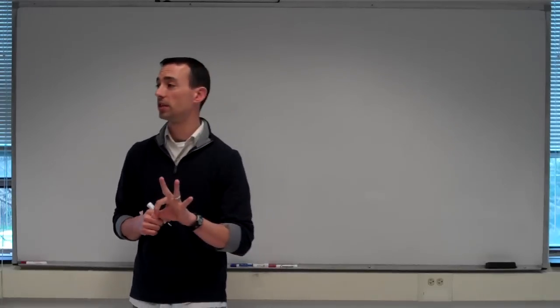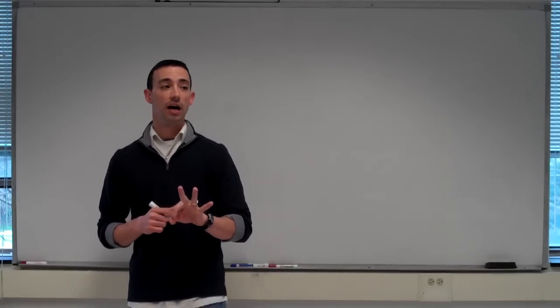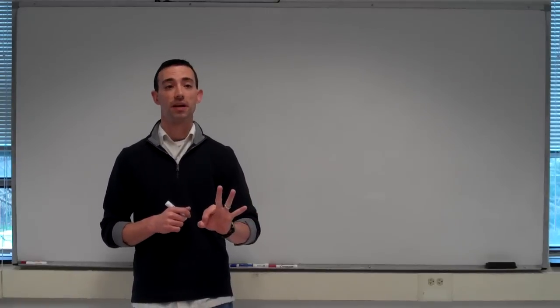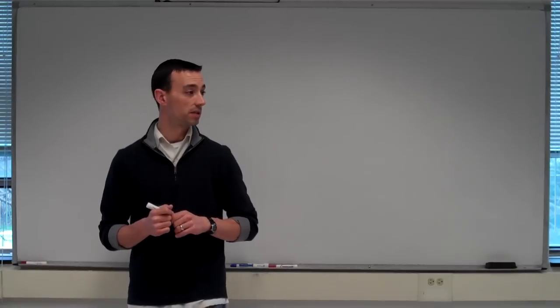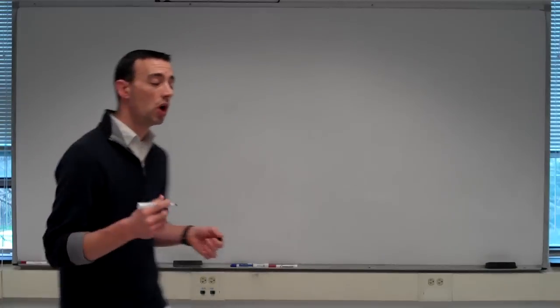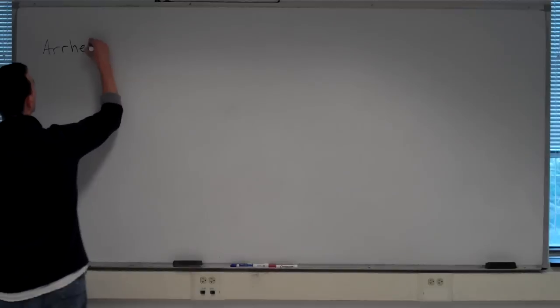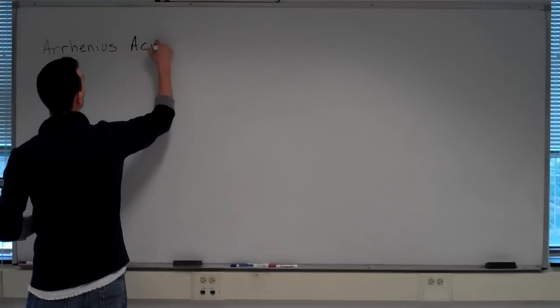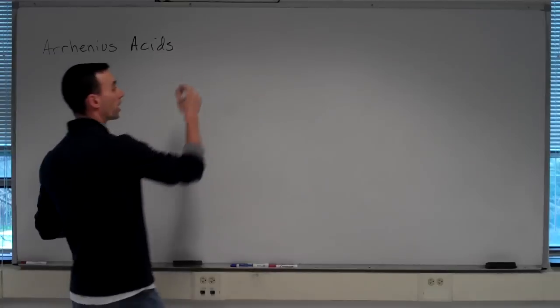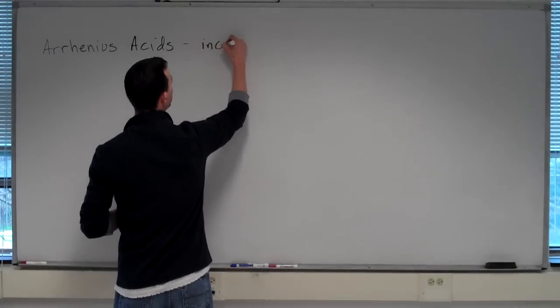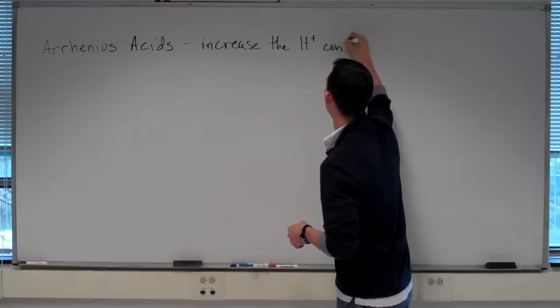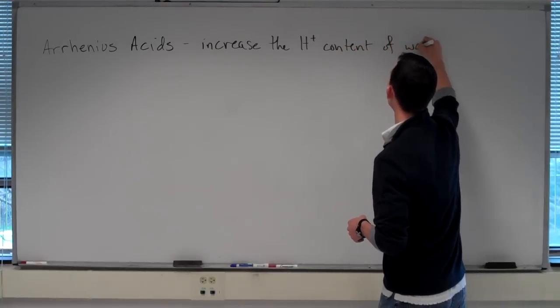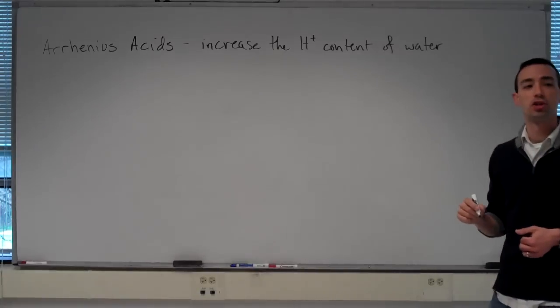Now, there are three different definitions of acids and bases. That's a bit of a problem for us as chemists, because we have to agree to which definition we're using when we want to work with acids and bases. The first definition of acids and bases were called the Arrhenius acids and bases. Arrhenius acids were compounds that were said to increase the hydrogen ion content of water when they were added to water.